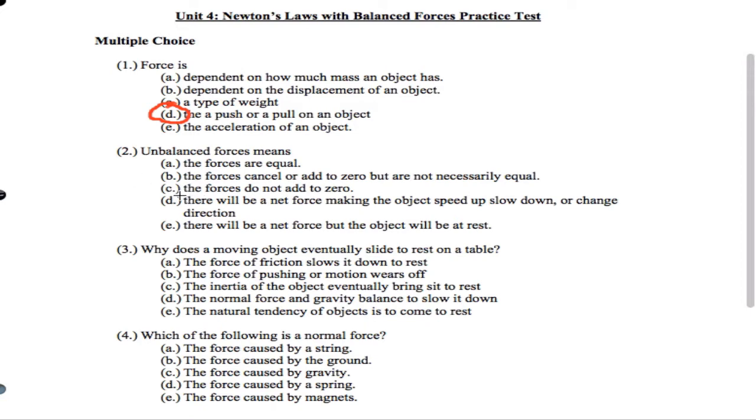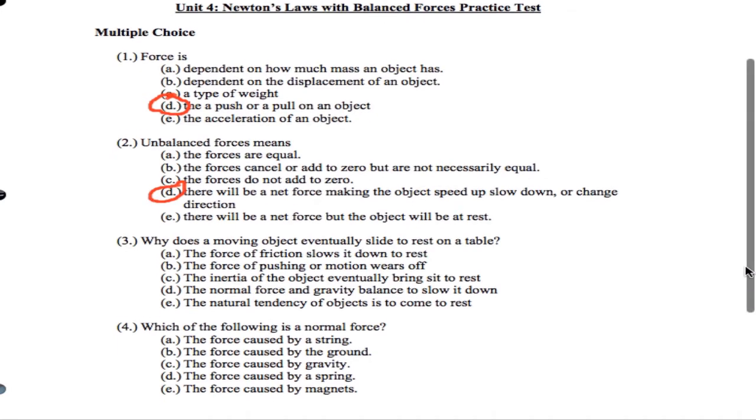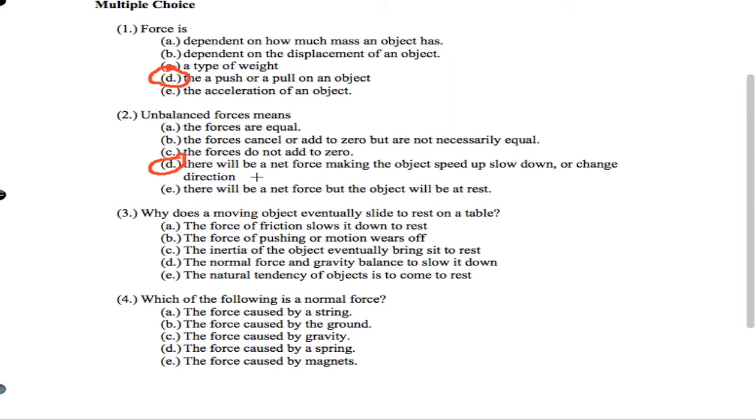So when the forces are not balanced, that means choice D is going to be the correct choice, that it's going to speed up, slow down, and change direction. And in fact, whenever this occurs, that automatically means that the forces are unbalanced.